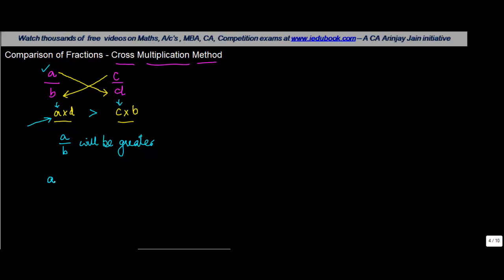Whereas, in case you had a into d and c into b, in case c into b is greater than a into d, now whose numerator is greater, c. The numerator which was there is c. So therefore, the fraction whose numerator is greater is going to be bigger. So c upon d will be greater than a upon b. This was situation 1, this was situation 2.